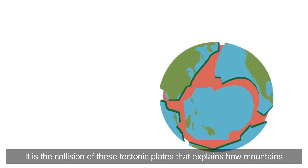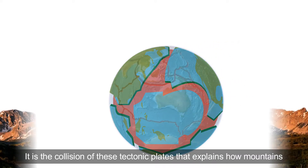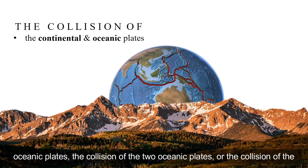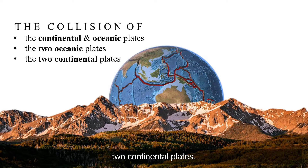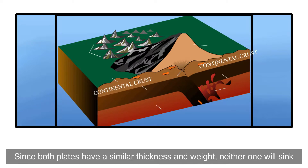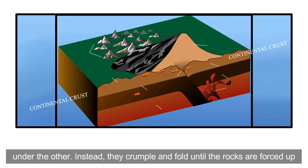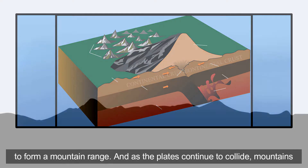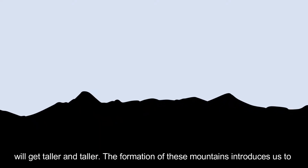It is the collision of tectonic plates that explains how mountains are most commonly formed. It could either be the collision of the continental and oceanic plates, the collision of two oceanic plates, or the collision of two continental plates. However, mountains mostly form where two continental plates collide. Since both plates have a similar thickness and weight, neither one will sink under the other. Instead, they crumple and fold until the rocks are forced up to form a mountain range, and as the plates continue to collide, mountains will get taller and taller.